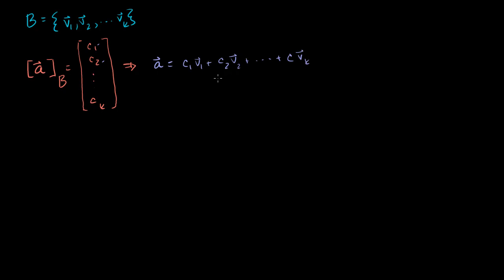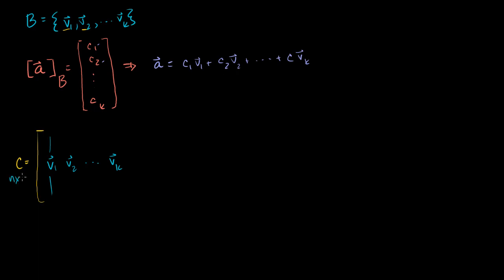Another way to write this is: if I had a matrix where the column vectors were the basis vectors of b, let me say I have some matrix C that looks like this, where its column vectors are just these basis vectors — v1, v2, all the way to vk. If we assume that all of these are members of Rn, then each of these vectors is going to have n entries. So it's going to be an n by k matrix — n rows and k columns.